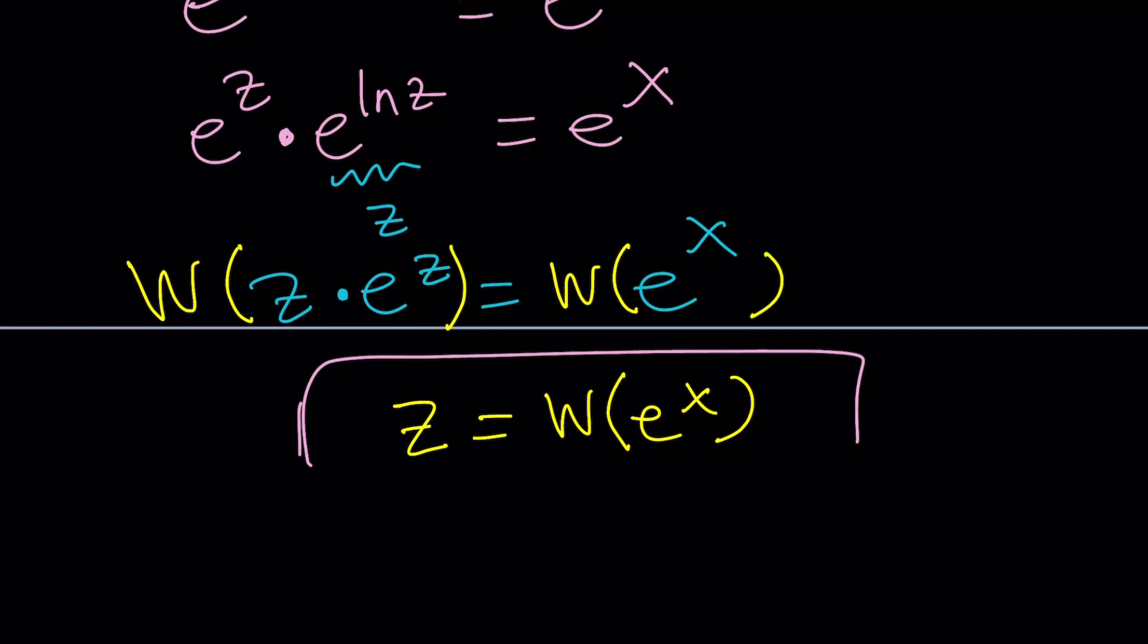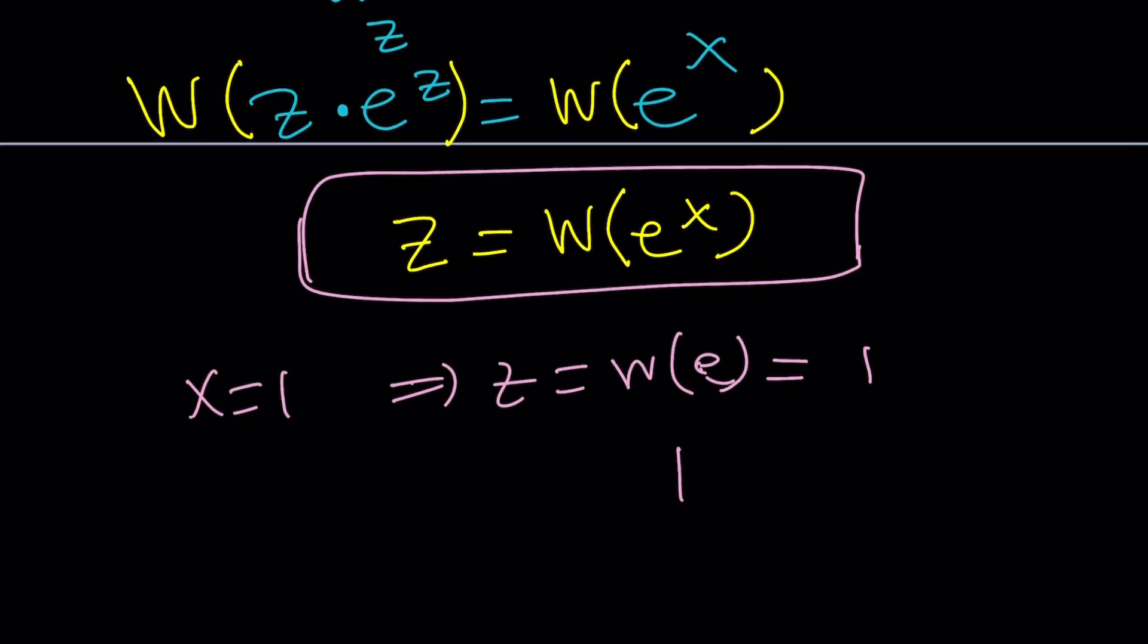Well, what does that mean, though? Well, if you replace x with something like, let's say, x equals 1, then z will be Lambert W of e, which is 1, right? Obviously, you can go ahead and just test it out with different values. And by the way, why is this working? Because we can write this as 1 times e to the 1, and when you apply Lambert W, it's just going to give you 1. But there's a lot of different ways you can get there, or just use a calculator.